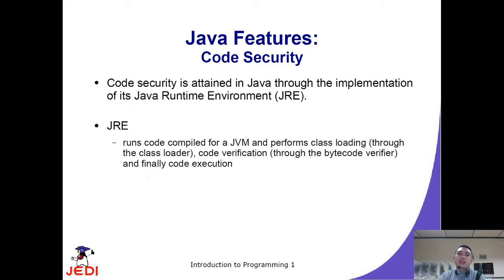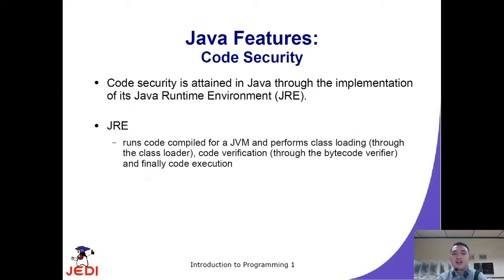Another feature is code security. Code security is attained in Java through the implementation of the Java Runtime Environment. You cannot run programs in Java without the JRE. The JRE runs code compiled for the JVM and performs class loading through the class loader and code verification through the bytecode verifier, and then it executes the code. In summary: it runs the code, converts it to bytecode, the JVM reads the bytecode, loads and verifies the classes, and finally the Java Runtime Environment executes the code.